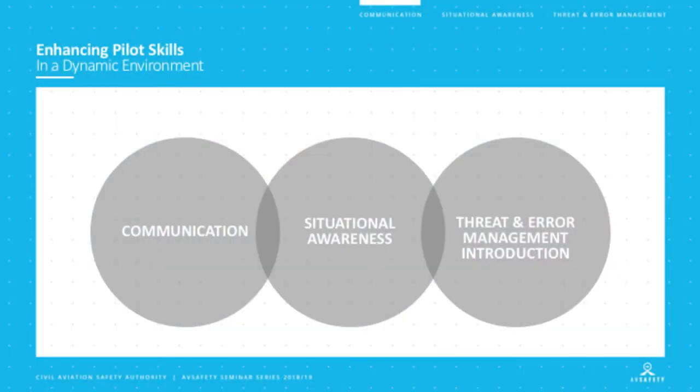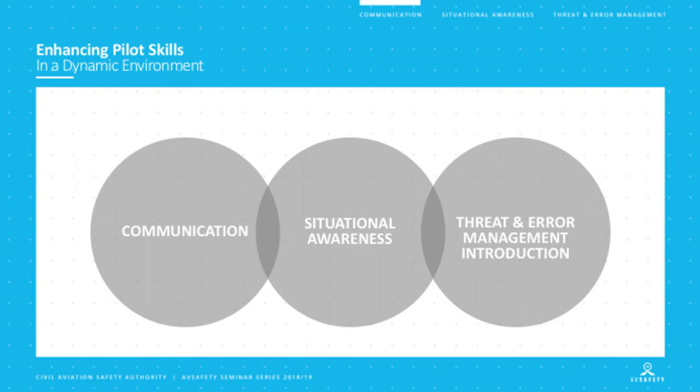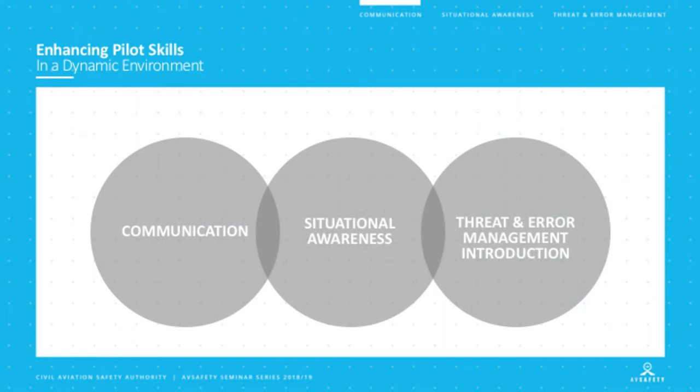There are three things we're going to look at today. The first is communication — because the way we communicate in the air has significant challenges, and it's often very different to face-to-face ground communication. The second is situational awareness, a huge area of study, including identifying red flags in your own flying that might indicate you're losing situational awareness. The third is threat and error management, which has been around in aviation for a couple of decades and is becoming increasingly important.